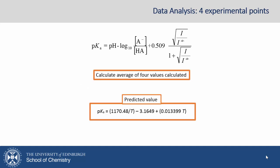We can calculate an average of the four values calculated, and compare this average to the predicted value according to the expression for any given temperature. You'll know the temperature of your solutions, and you'll be able to calculate what pKa you should get.